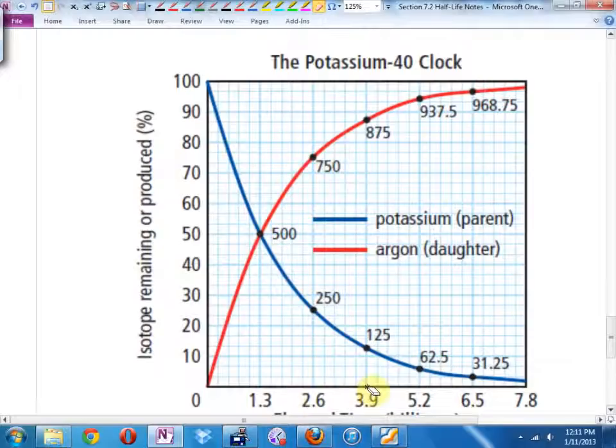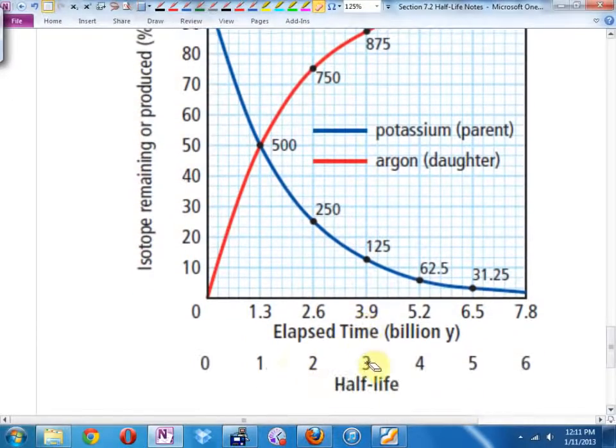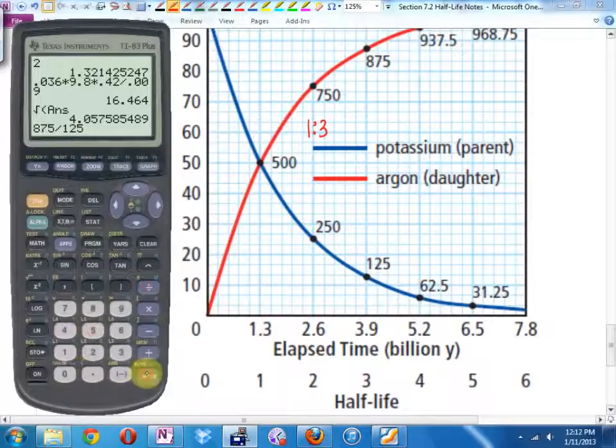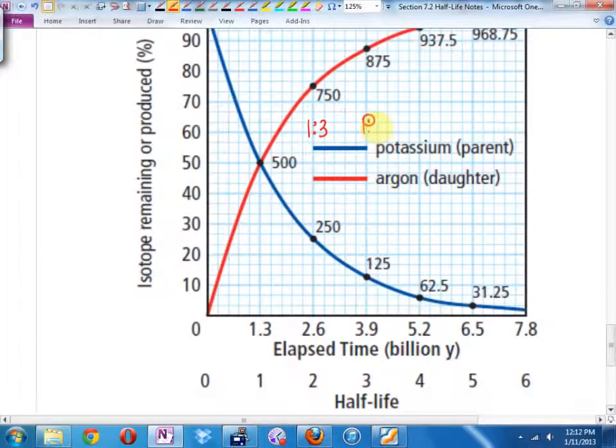Another 1.3 billion years. Do they have your third half-life? Now, you have 12.5%, 125 grams if we're starting with a kilogram, 875 grams of argon-40. So, you can use this as a clock. After the first half-life, you have a 1 to 1 ratio. After the second half-life, you have a 1 to 3 ratio. You have three times as much of the new substance as the old substance. After the third half-life, you have 875 divided by 125. You have a 1 to 7 ratio. And you can use that, then, to figure out how far along you are in this clock.